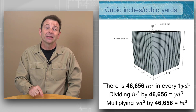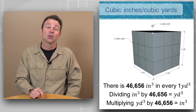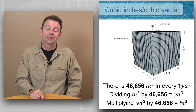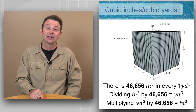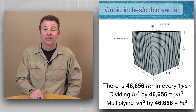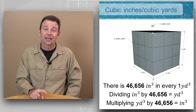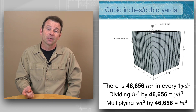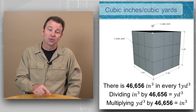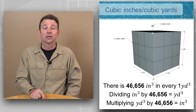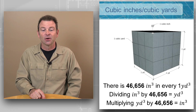So you can divide your cubic inches by this factor of 46,656 to arrive at your cubic yards. And if you wanted to go back the other direction, you could take your cubic yards and multiply by 46,656 to arrive at your cubic inches.